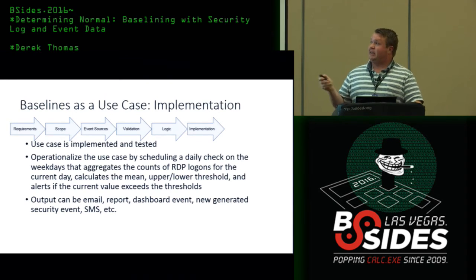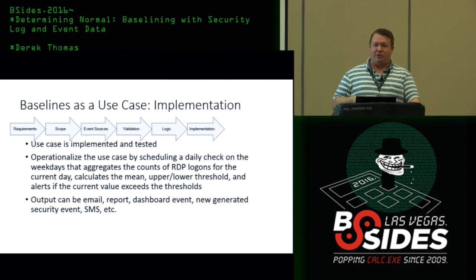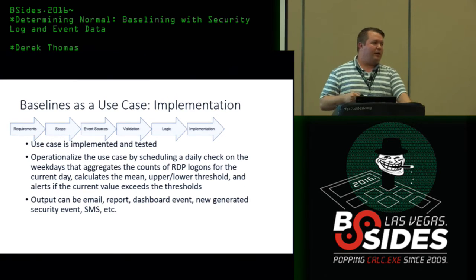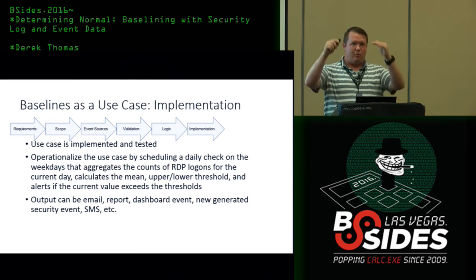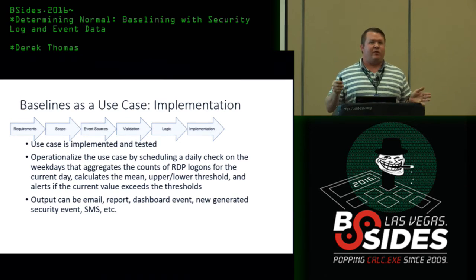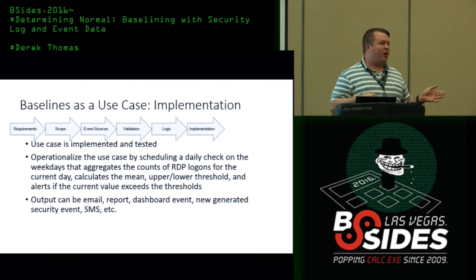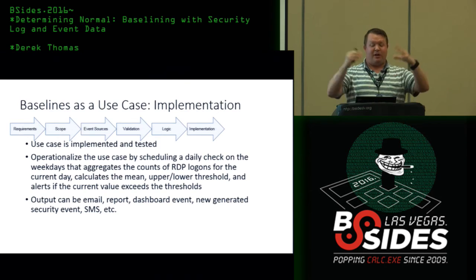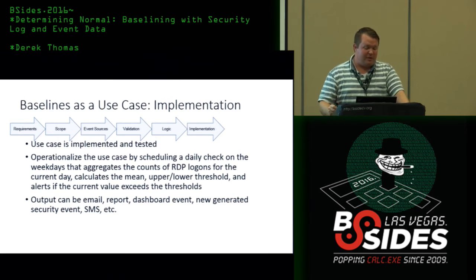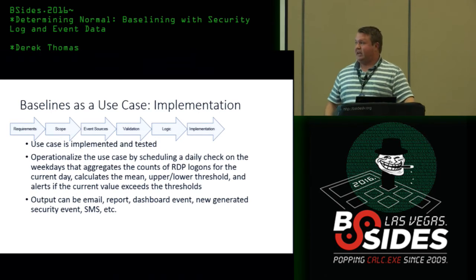The implementation and testing phase is where you actually implement the use case, create the thresholds, and define the output. The outputs can be an email alert, reports, a dashboard event or running tally, or a generated security event to be used with another rule — for example, if enough weird activity happens for a specific user, you trip a bigger offense.